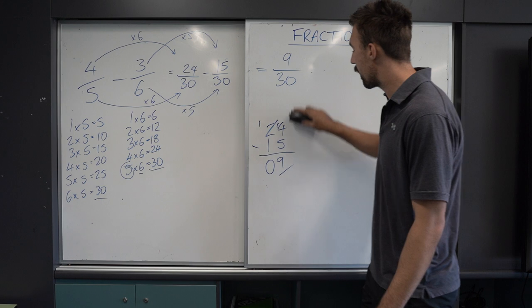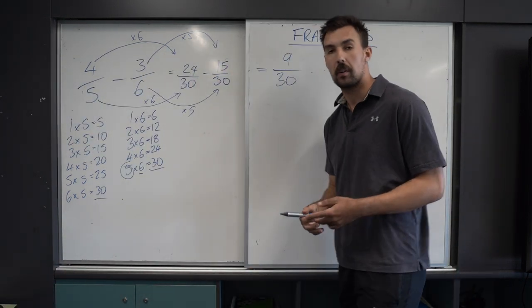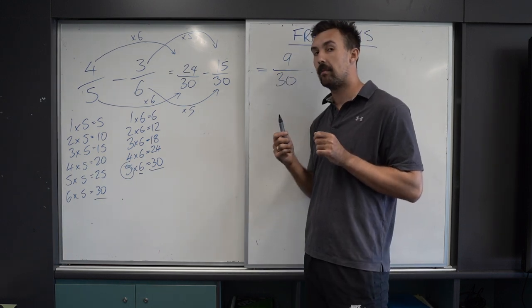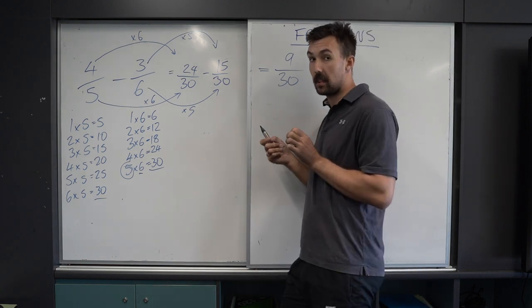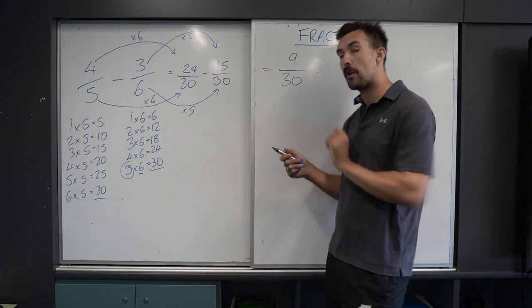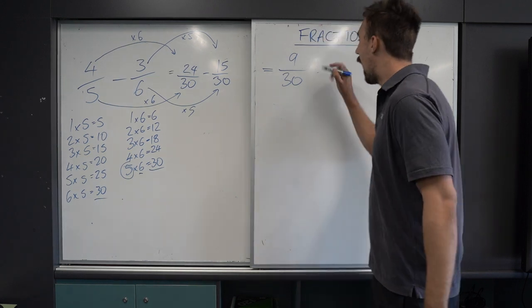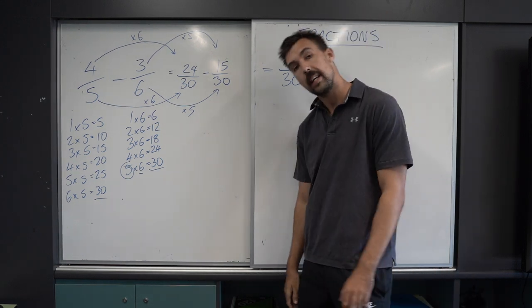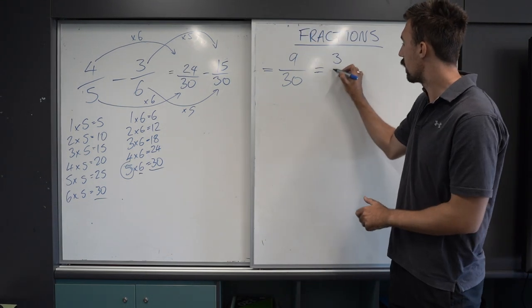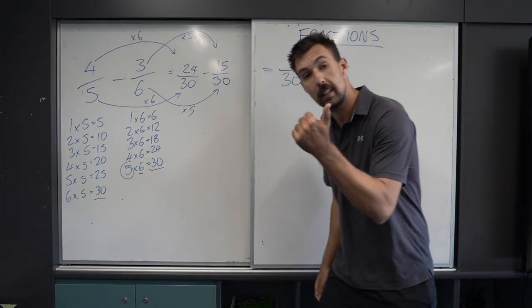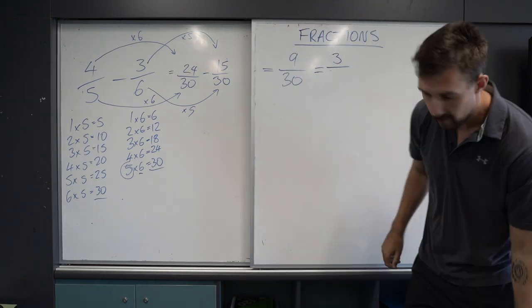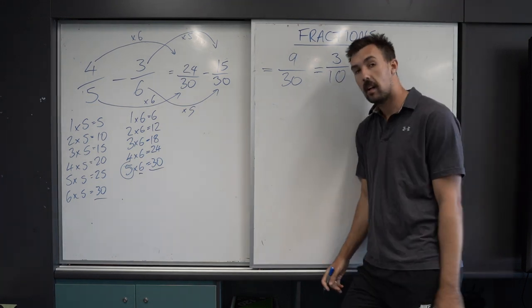Can we simplify 9 over 30? We'll skip 1 and go to 2 — 2 can't divide evenly into 9. Can 3 divide evenly into 9? Yes. And 3 can divide into 30 evenly as well. 3 goes into 9: 3, 6, 9 — that's 3 times. 3 goes into 30: 3, 6, 9, 12, 15, 18, 21, 24, 27, 30 — that's 10 times. So 9 over 30 simplifies to 3 over 10.